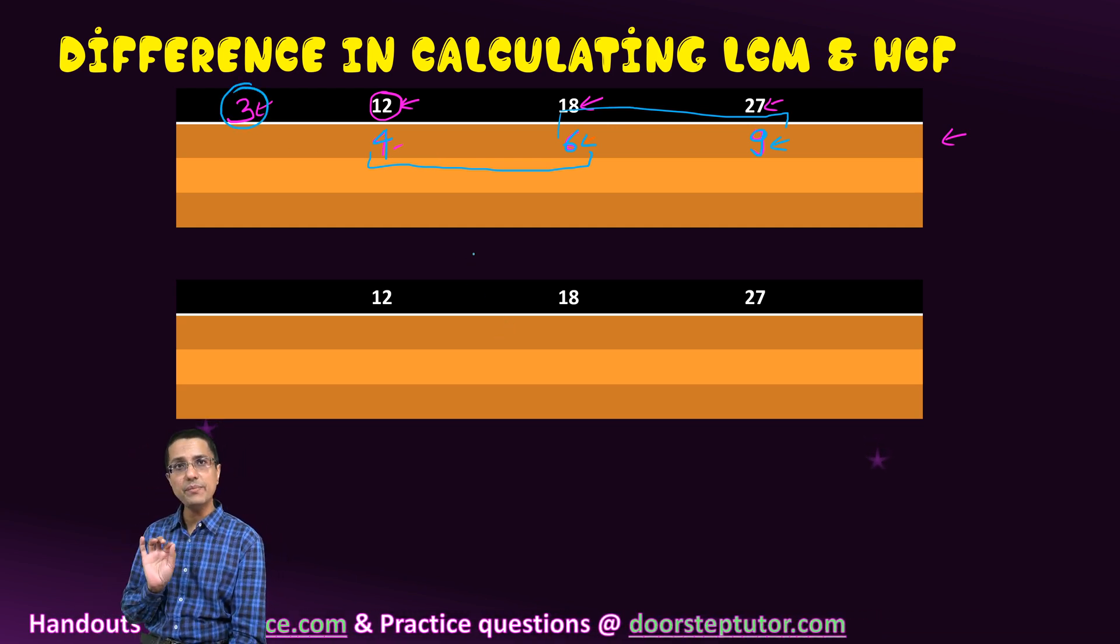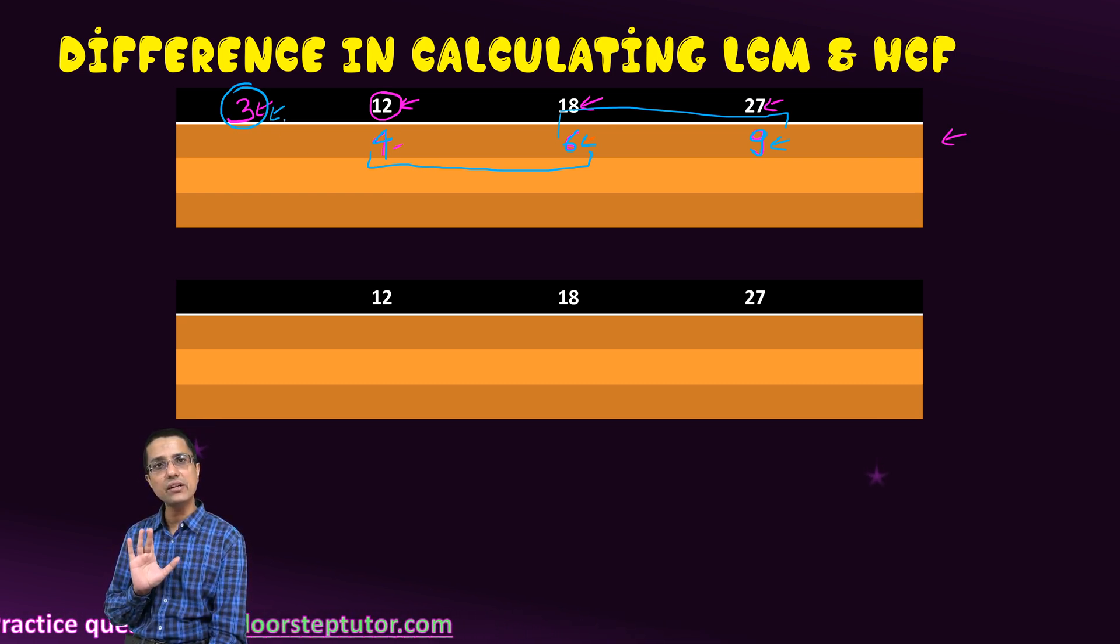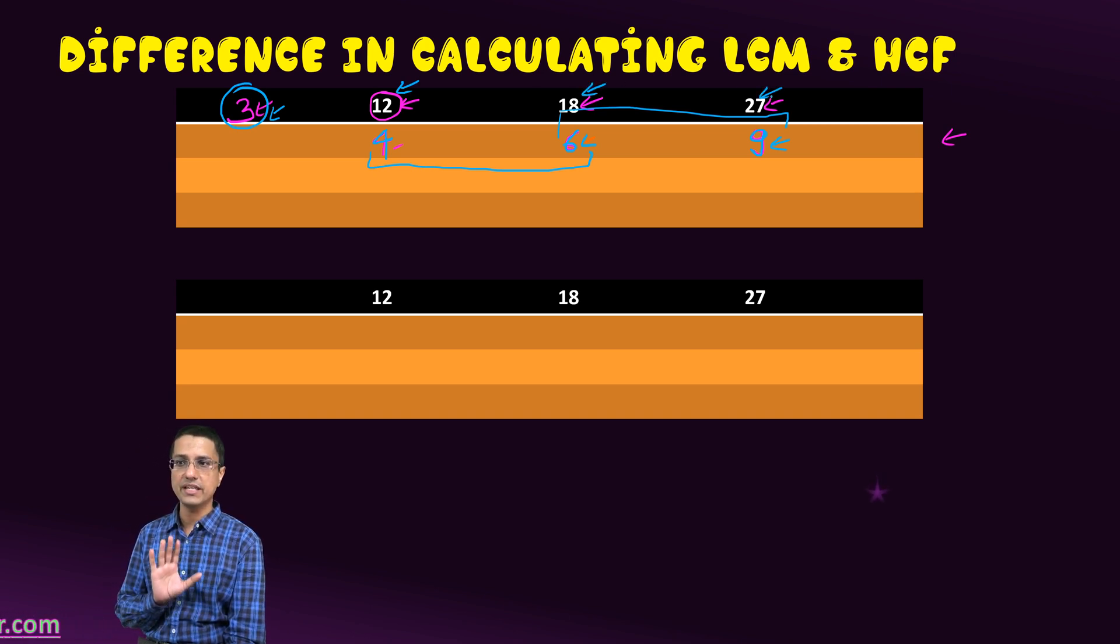We'll just stop here. The key being that a number is written here. The division is done only when it divides each of the numbers here.